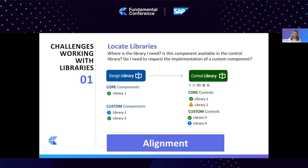There are three challenges that Stefan and I identified when working with libraries. The first is locating the library — we might have libraries that come directly from SAP design, which we call core components. We just had a presentation about Fiori Horizon, and that's what we use as guidance to fulfill that design direction. However, the core components are not enough — you might need to create custom components, and then where are those components located?